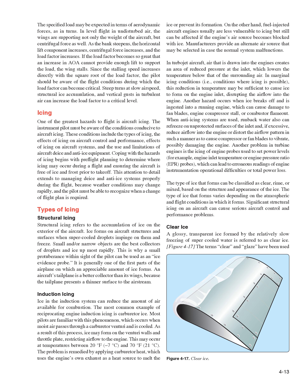Induction Icing. Ice in the induction system can reduce the amount of air available for combustion. The most common example of reciprocating engine induction icing is carburetor ice, which occurs when moist air passes through a carburetor venturi and is cooled. Ice may form on the venturi walls and throttle plate, restricting airflow to the engine. This may occur at temperatures between 20 degrees Fahrenheit (minus 7 degrees Celsius) and 70 degrees Fahrenheit (21 degrees Celsius). The problem is remedied by applying carburetor heat, which uses the engine's own exhaust as a heat source to melt the ice or prevent its formation. In turbojet aircraft, air drawn into the engines creates an area of reduced pressure at the inlet, which lowers the temperature and in marginal icing conditions may cause ice to form on the engine inlet, disrupting the airflow.